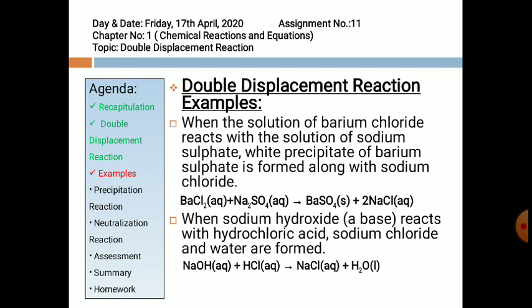...reacts with sodium sulfate, the chemical equation goes like this: BaCl₂ plus Na₂SO₄ — barium chloride and sodium sulfate — react to give BaSO₄, barium sulfate, and NaCl, sodium chloride. This barium sulfate is white in color and precipitates at the bottom of the flask in which the reaction takes place.